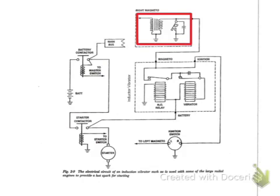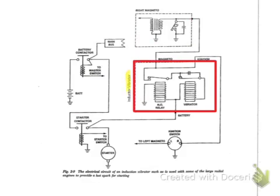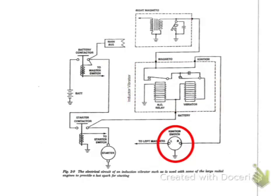At the top, you see the right magneto. In this circuit, the right magneto is used for starting, not the left, as is usually the case. And then in the middle, we have the inductor vibrator box itself. On the lower right, you'll see the ignition switch.